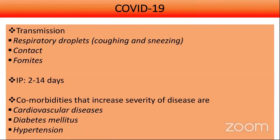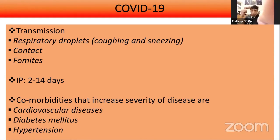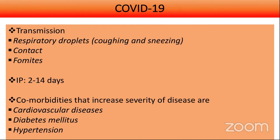COVID-19 transmission occurs through respiratory droplets — coughing, sneezing, contact with droplets, touching contaminated surfaces, and fomites (patient's clothes, bed sheets, etc.). The incubation period is 2 to 14 days, with most showing symptoms around day five or six. Comorbidities that increase disease severity include cardiovascular diseases, diabetes mellitus, and hypertension.